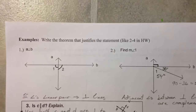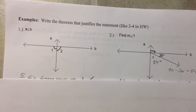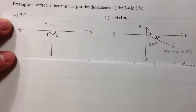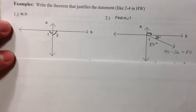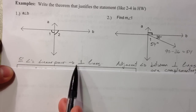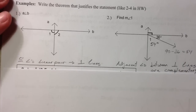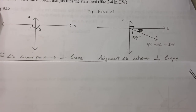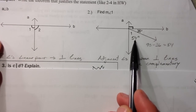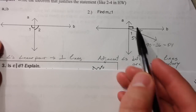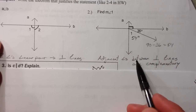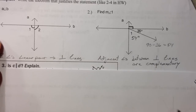Write the theorem that justifies this. We're saying a is perpendicular to b, and we know that angle 1 is congruent to angle 2 — the congruent angles forming a linear pair tells me that they're perpendicular. This next one is the corresponding angles theorem. Angle 1 is 54 degrees because this is a right angle, so these two are complementary — adjacent angles between two perpendicular lines are complementary.